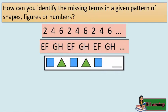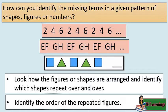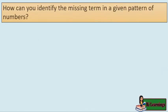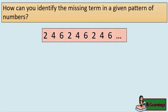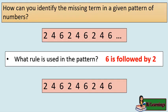How can you identify the missing terms in a given pattern of shapes, figures, or numbers? Consider: 2, 4, 6, 2, 4, 6, 2, 4, 6, 2, 4, 6, blank. What rule is used in the pattern? 6 is followed by 2. The missing term is 2.